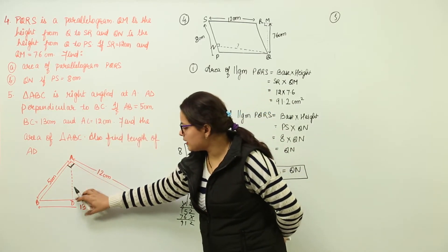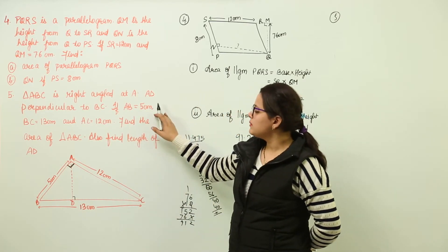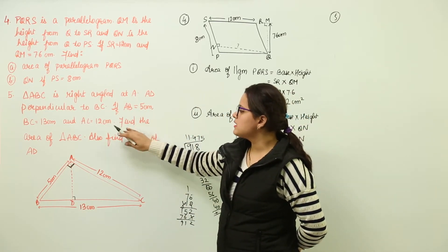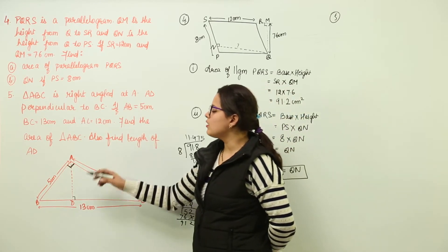We have AD perpendicular made to BC. You have AB given as 5, BC given as 13 and AC given as 12.